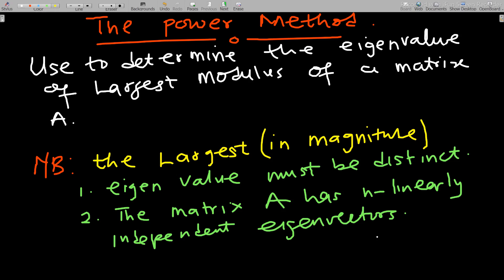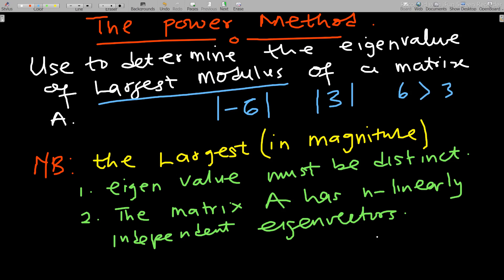So what do we mean by the power method? It is used to determine the eigenvalue of largest modulus of matrix A. This is very important — largest modulus. So it's not like the actual largest eigenvalue. What I mean is that if I have an eigenvalue of negative six and an eigenvalue of three, this method will give us negative six, because when I find the modulus of these two numbers I'll get six and three, where six is greater. So after our method we'll be able to get the eigenvalue to be negative six.